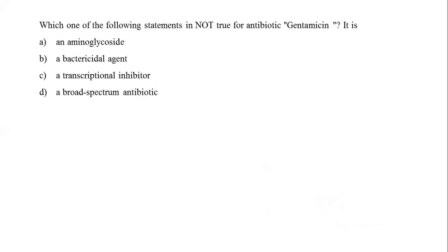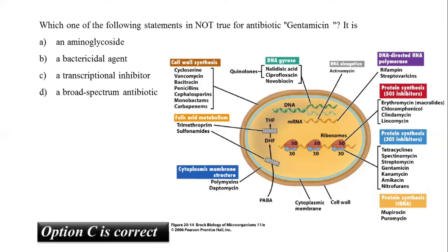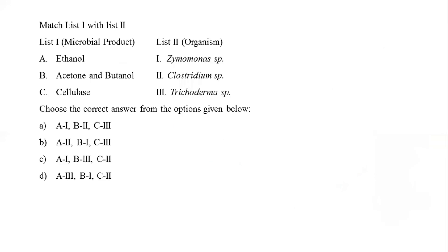The next question asks which statement is not true for antibiotic gentamicin. From the figure showing antibiotics and their functions, gentamicin is listed under protein synthesis 30S inhibitors. Hence, it is not a transcriptional inhibitor — option C is the incorrect statement and is the correct answer.